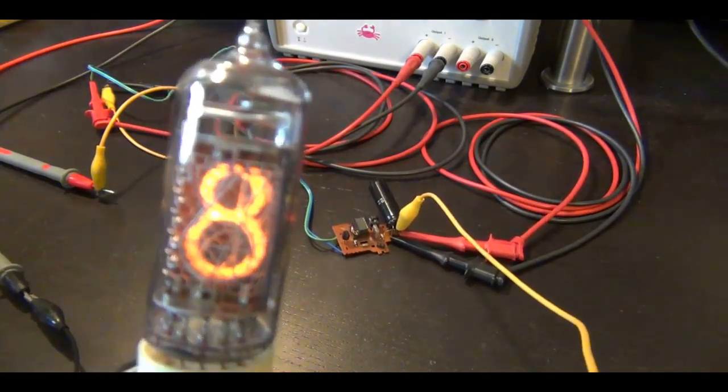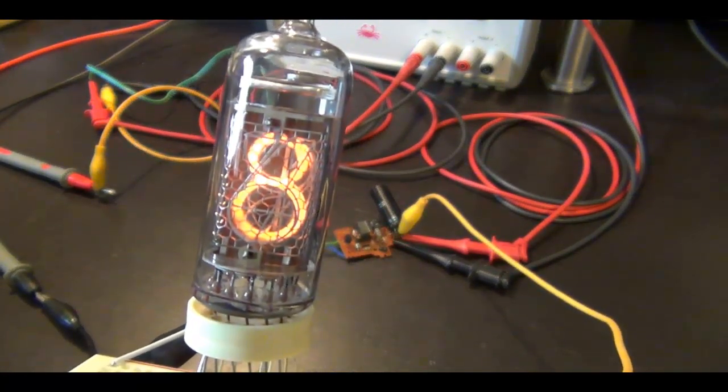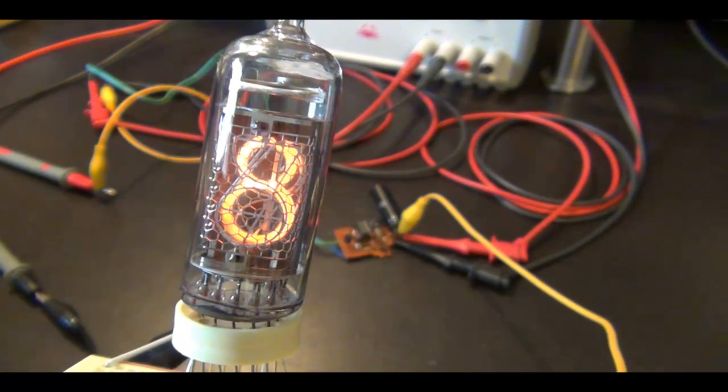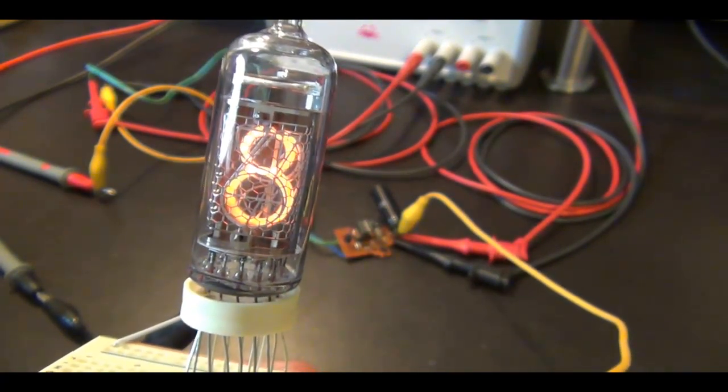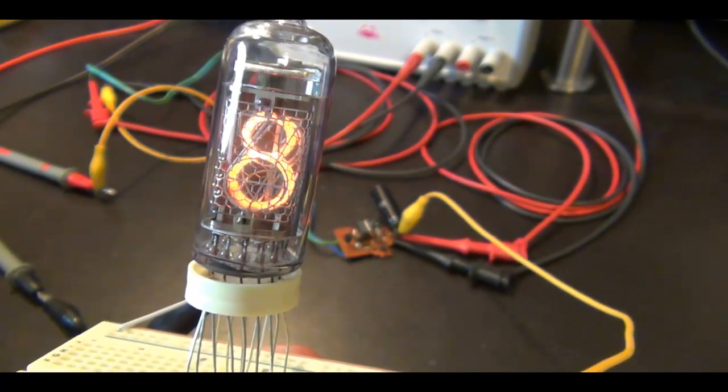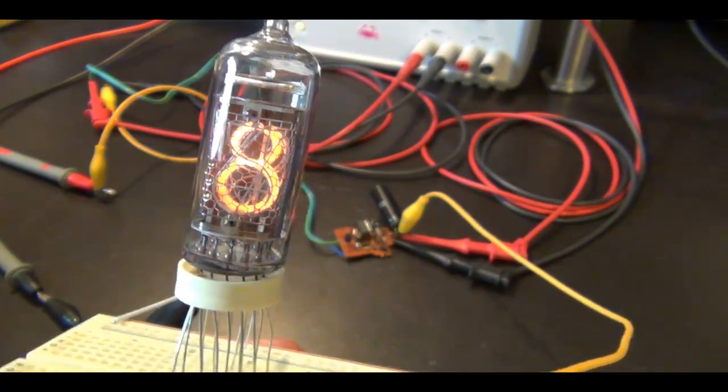So, you can see, when we get closer, the number 8 is glowing really nicely. It has a very nice orange glow color to it. So, I'm going to put this down on the ground. Leave this number 8 on, so we can measure now the efficiency of the DC-DC converter.